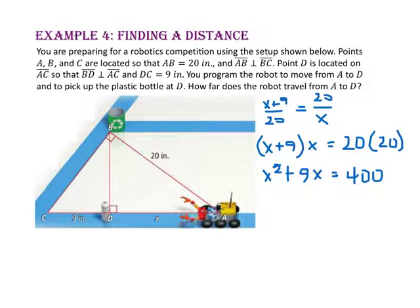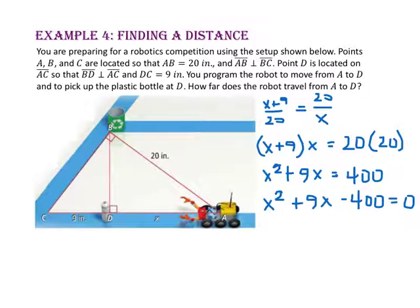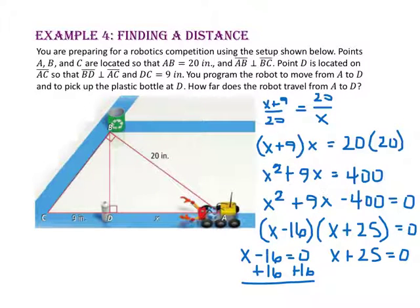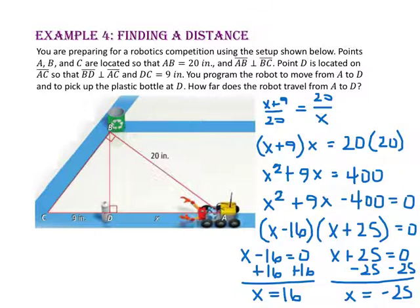We need to factor, so subtracting 400 from both sides gives X squared plus 9X minus 400 equals 0. When factoring, we want factors of negative 400 that sum to positive 9, so we use negative 16 and positive 25. Setting each factor equal to zero: X equals 16 or X equals negative 25. Since we cannot have a negative distance, the length from point A to point D is 16 inches.